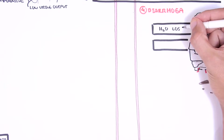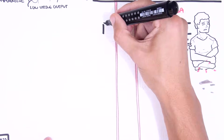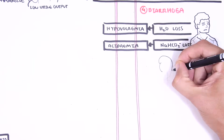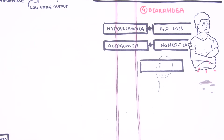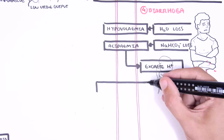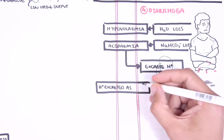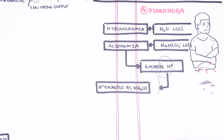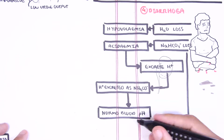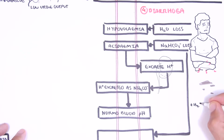With diarrhea, you are also losing water and electrolytes. Loss of water means hypovolemia. Electrolyte loss is in the form of sodium bicarbonate. Loss of bicarbonate leads to acidemia — a reduced pH in serum. In an attempt to normalize this, the kidneys secrete hydrogen ions in urine via ammonium chloride, which stabilizes serum pH. The loss of sodium in diarrhea with bicarbonate is what contributes to hypovolemic hyponatremia.